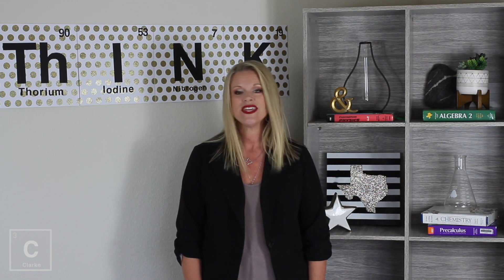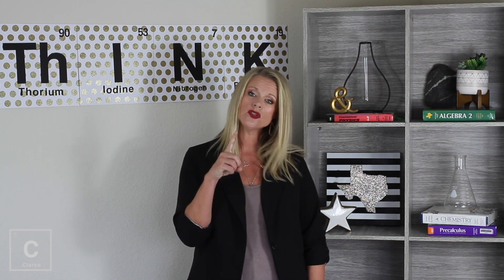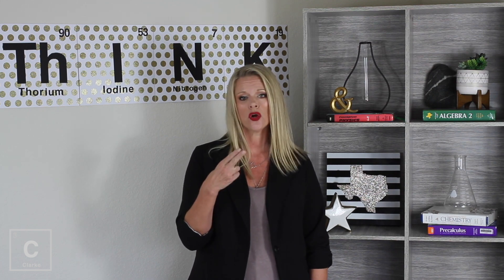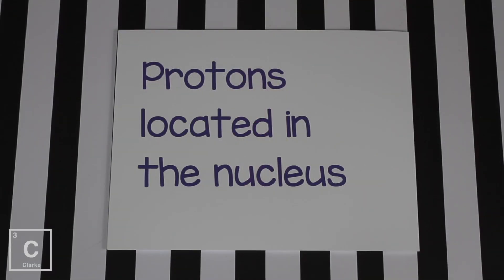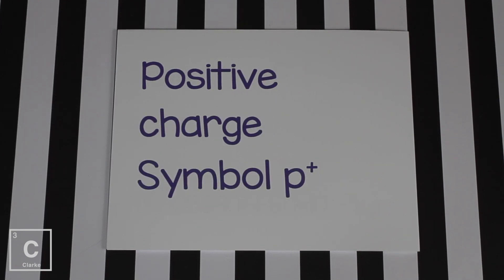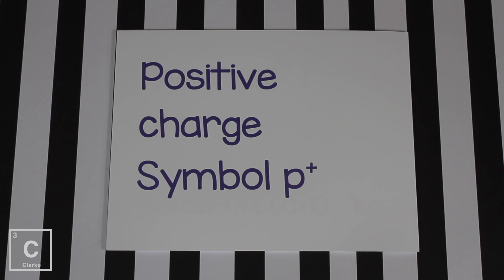That's why atoms are considered to be the smallest particle, even though we know the atom is made up of even smaller particles called subatomic particles. The atom is made up of three particles: protons, neutrons, and electrons. Protons are located in the nucleus. They have a positive charge, and their symbol is lowercase p with a superscript plus to represent that positive charge.